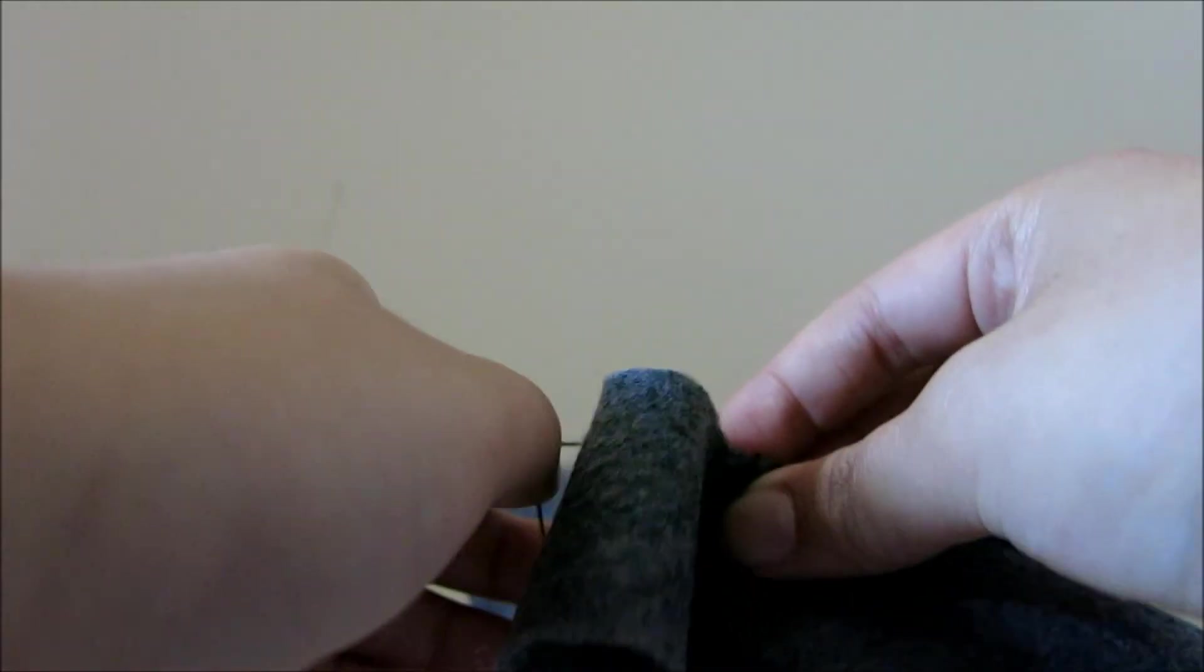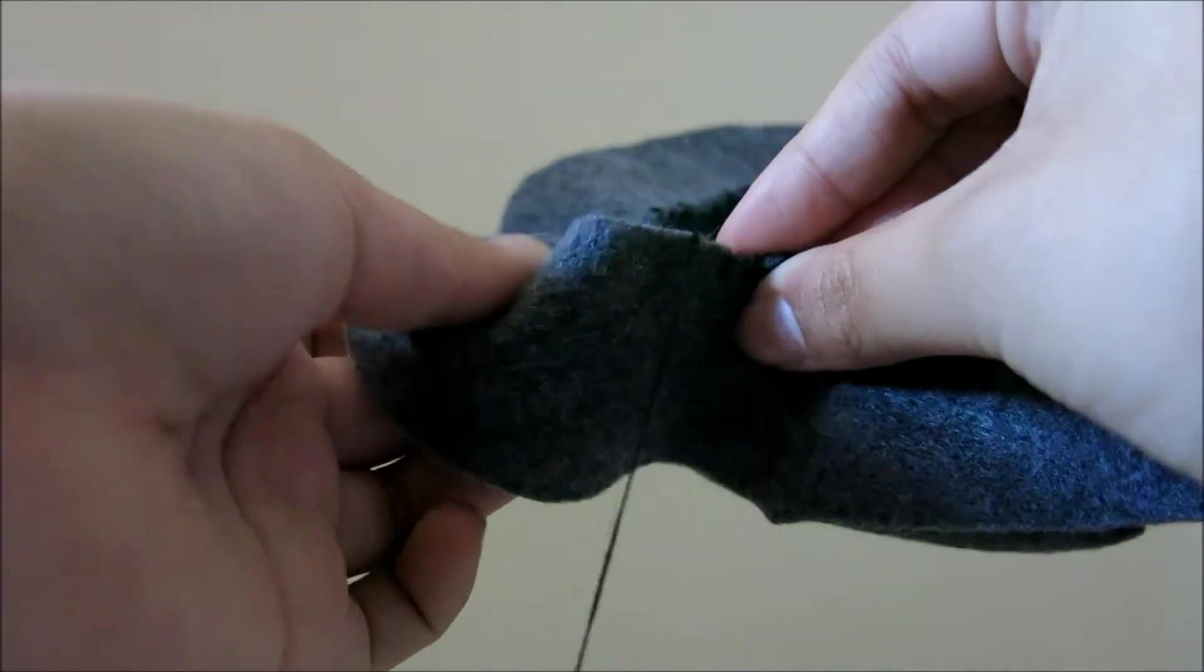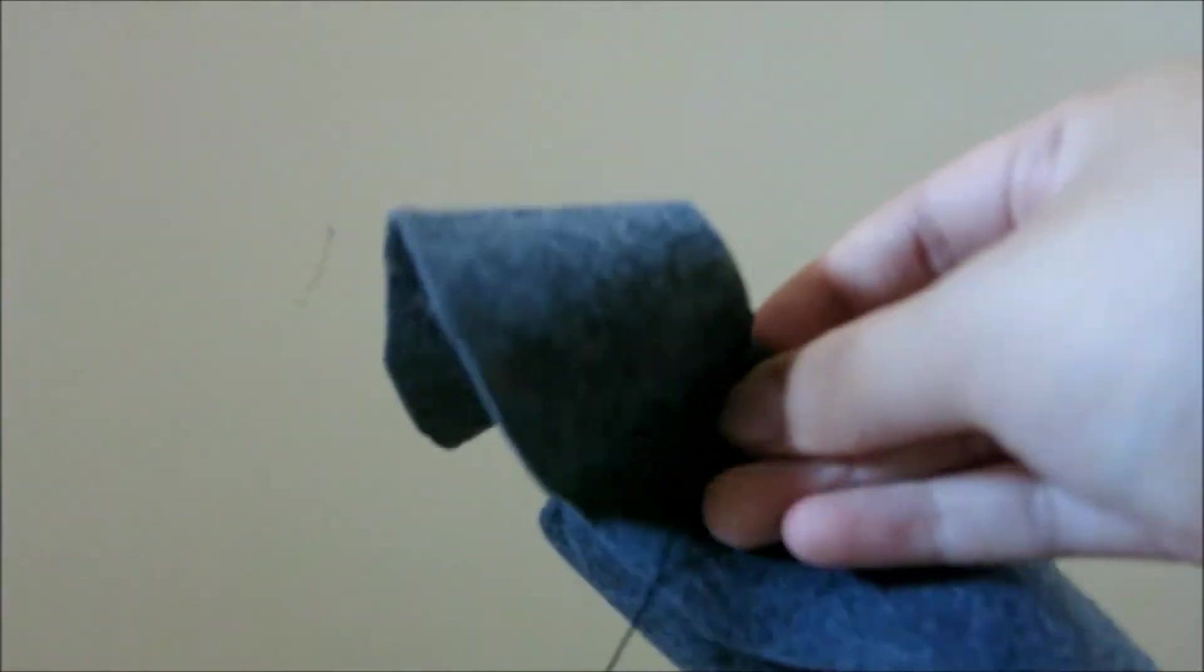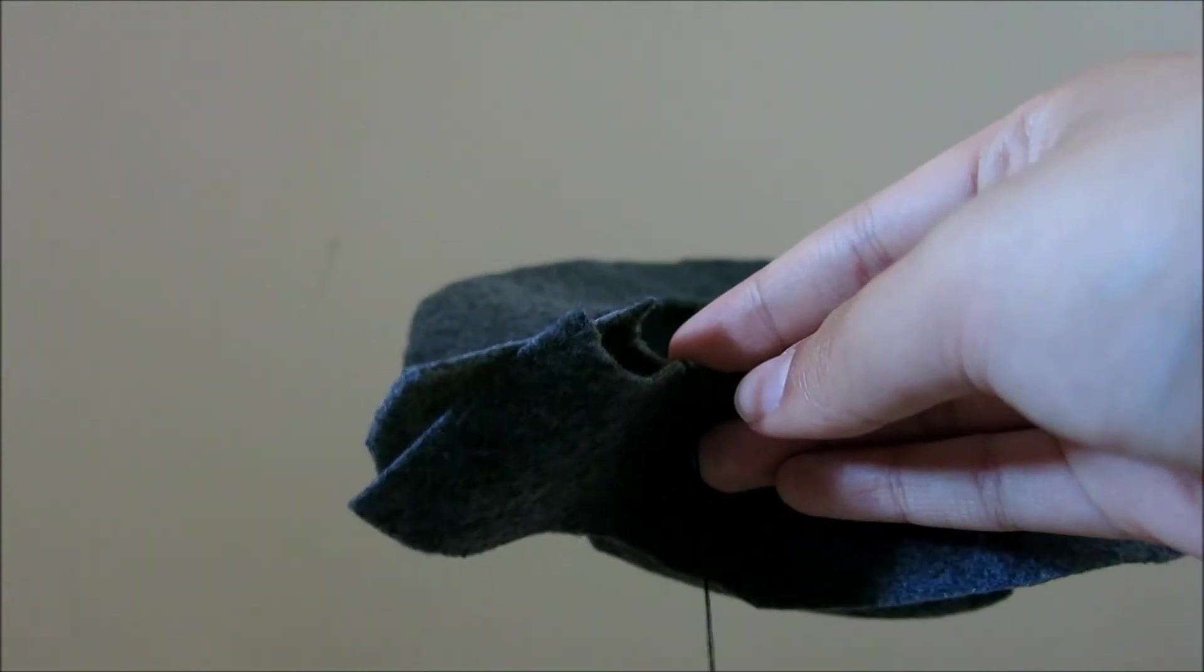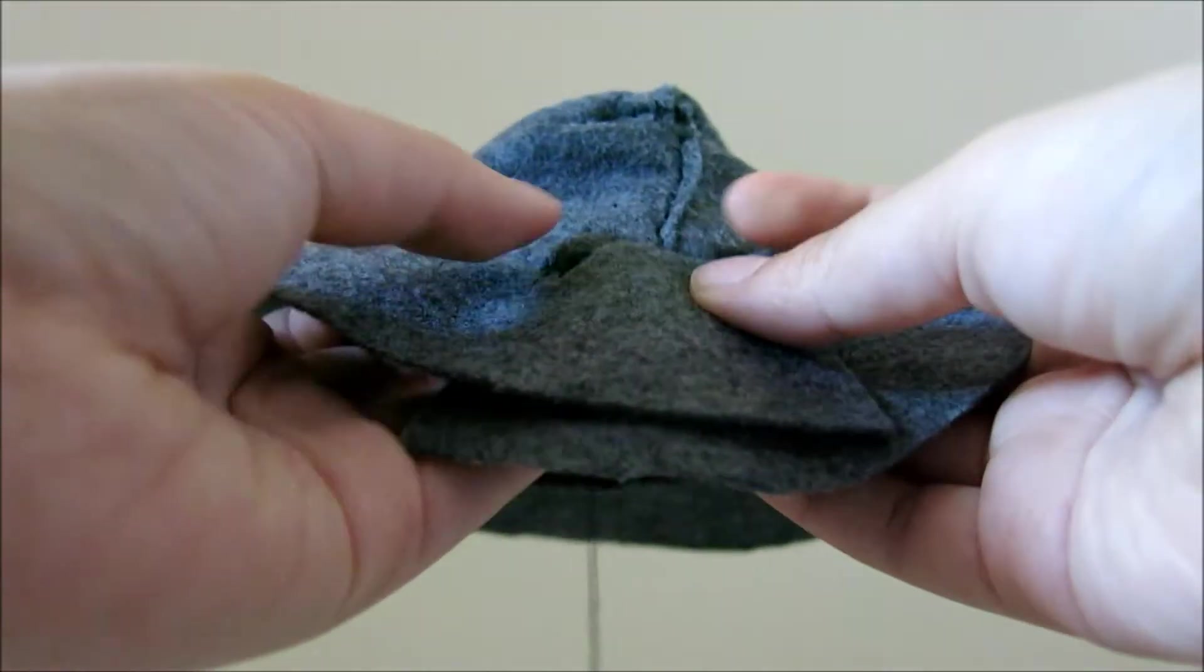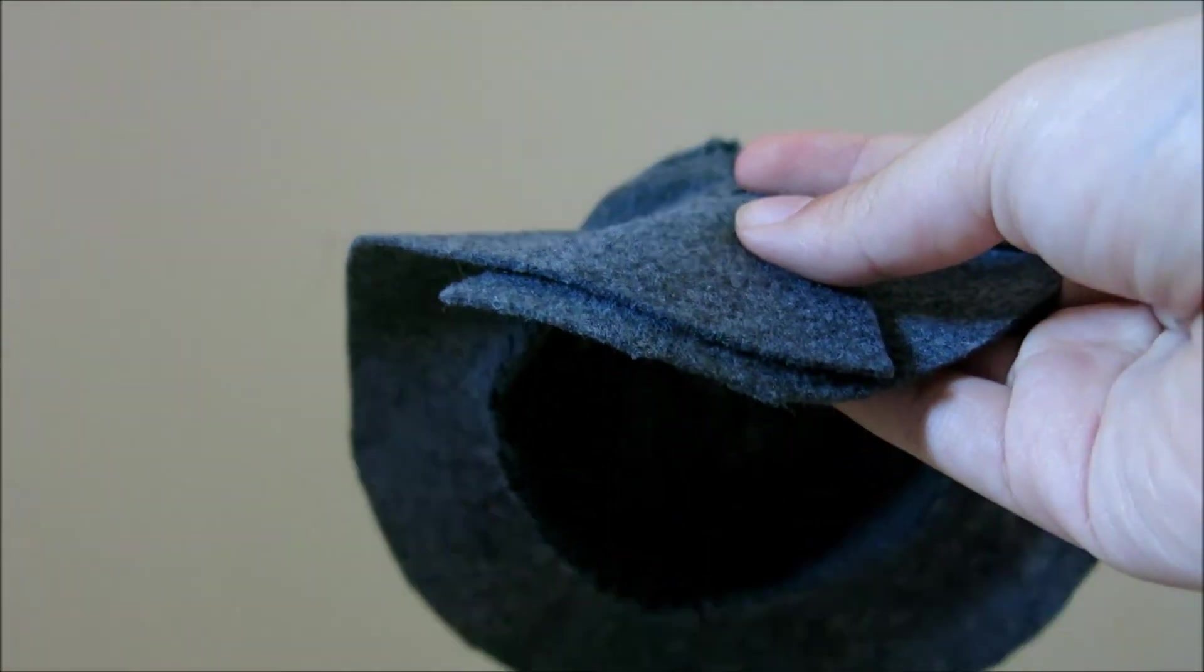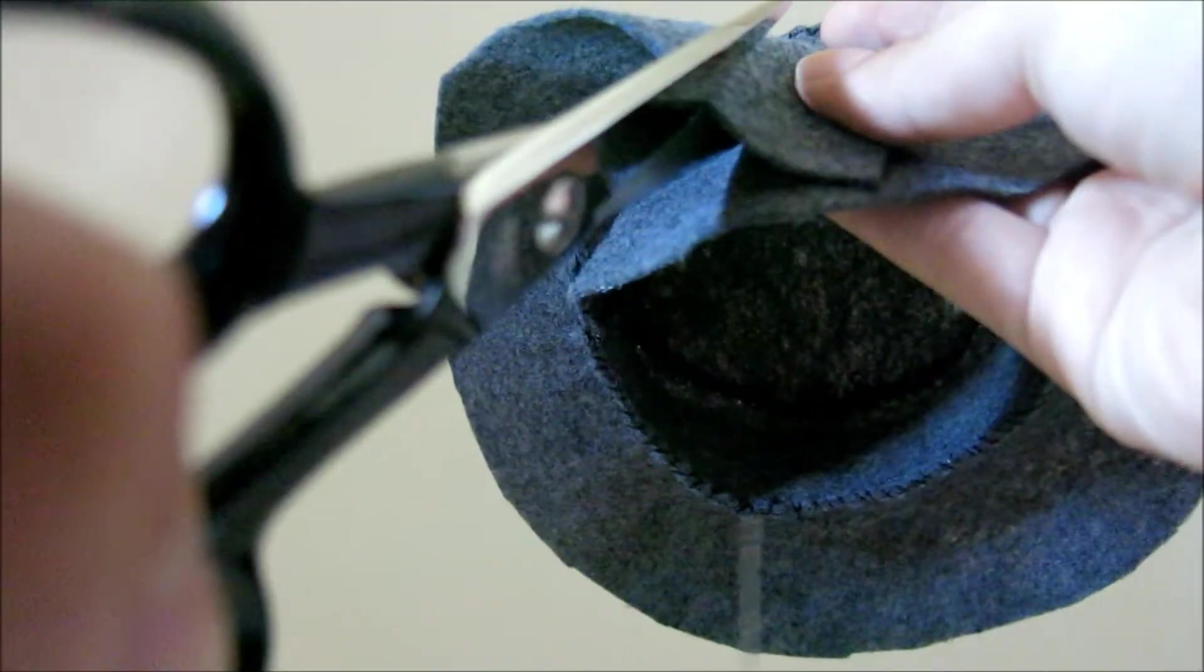So one problem that I ran into and that you might run into if you do this is that there might be a little bit of extra brim here that you cannot sew on because there's not enough of the basket. So an easy way to fix this is just cut down just like that. Now that I've made my incision, I noticed that when I cross these two pieces, they overlap quite a bit and then it doesn't look very nice. So I'm going to take my scissors again and I'm just going to trim off a little bit from each side.